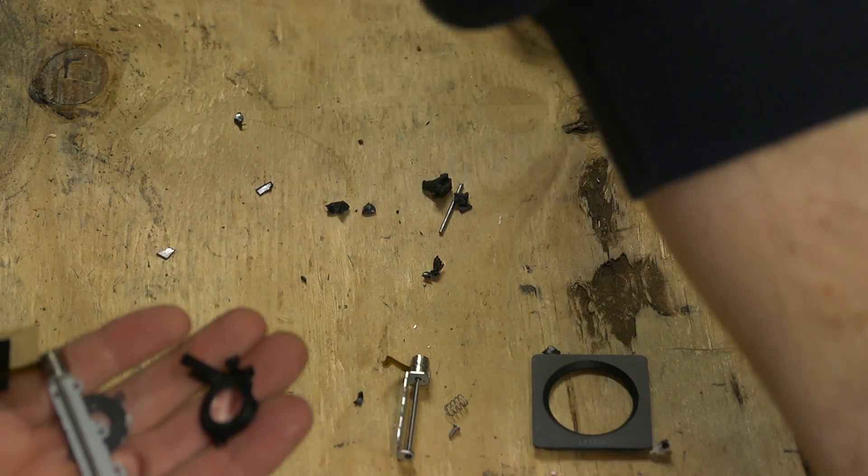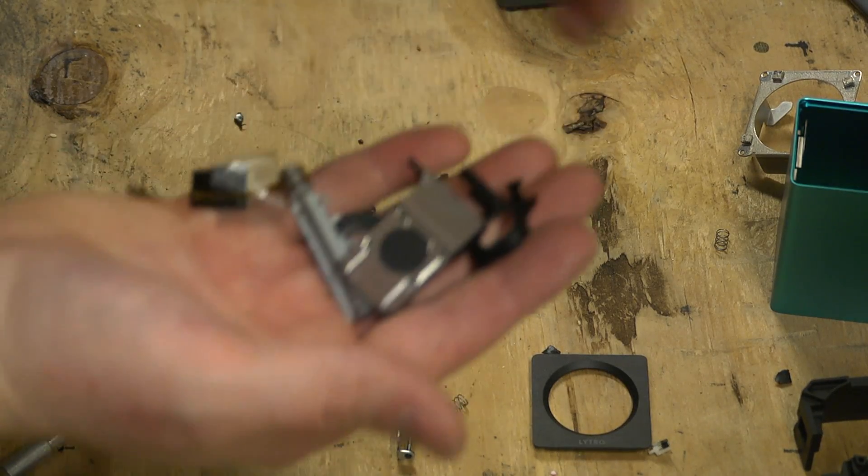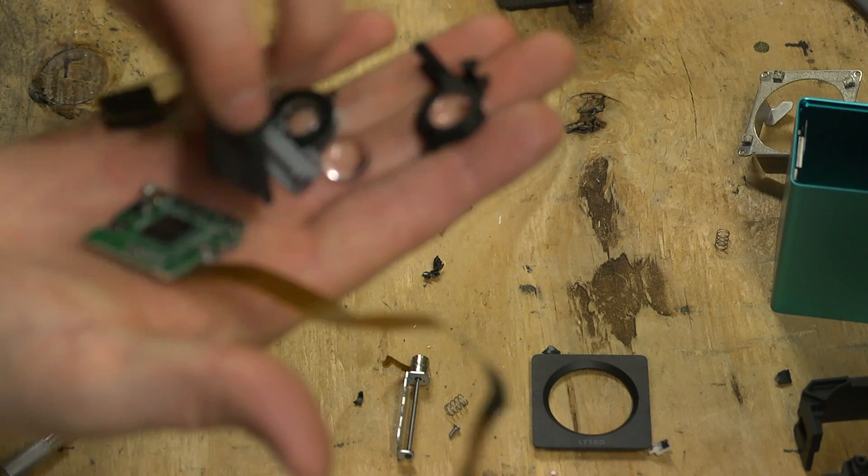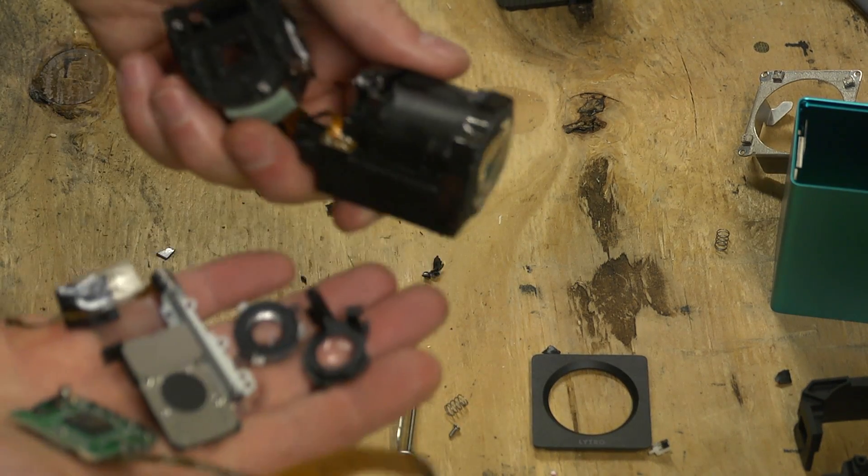The drive motors, the electronic shutter, and the sensor. That's pretty much what was inside the housing.